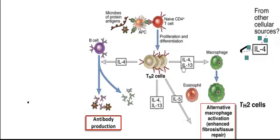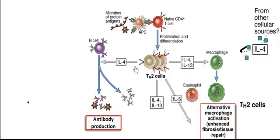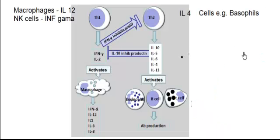To summarize: activated T cells bind to interleukin 4; interleukin 4 inhibits macrophages; interleukin 4 also activates B cells to produce antibodies; interleukin 4 and interleukin 13 also cause muscle cells to degenerate and intestinal cells to produce mucus; immunoglobulin E is also involved with muscle cells; and macrophages are deactivated by interleukin 4 and interleukin 13.